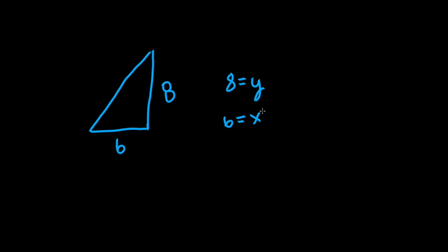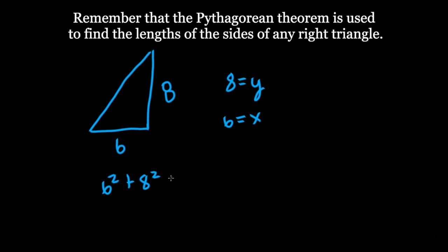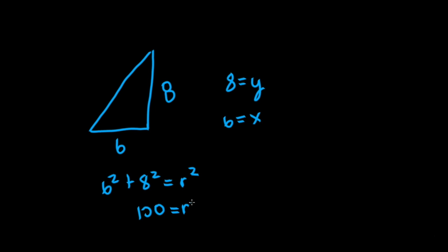We can find the value of r by using the Pythagorean theorem. 6 squared plus 8 squared is going to give us r squared. 6 squared plus 8 squared equals 100. So if 100 equals r squared, the square root of 100 will equal r. So if we take the square root, we see that 10 equals r.